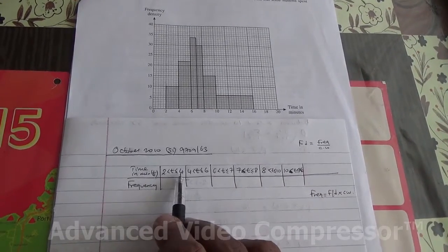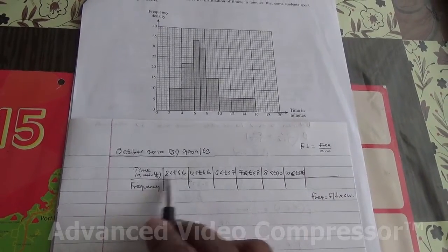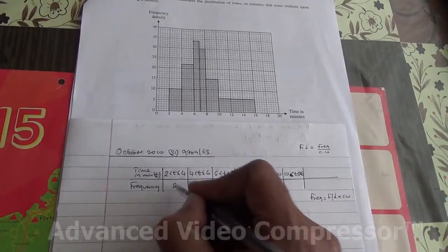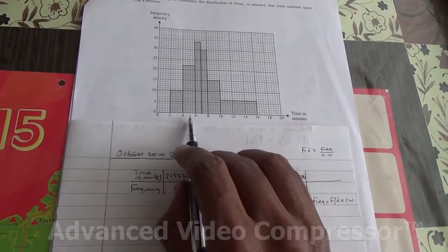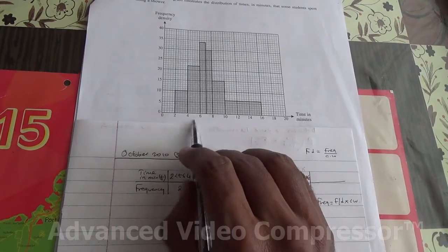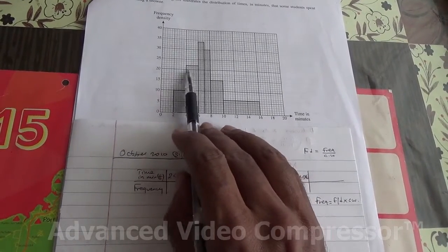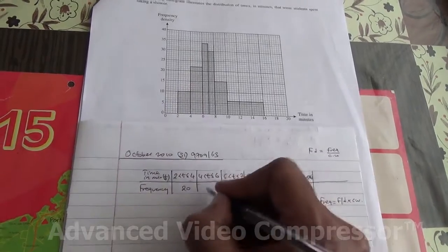So what is the class width from 2 to 4? It is 2, so you take 2 times 10. So 2 times 10 is going to give you 20. Similarly, you can do this for the second bar. 6 minus 4 is 2, therefore 2 times 22. That's going to be 44.